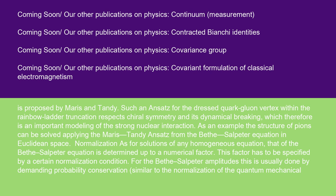Normalization: as for solutions of any homogeneous equation, that of the Bethe-Salpeter equation is determined up to a numerical factor. This factor has to be specified by a certain normalization condition. For the Bethe-Salpeter amplitudes, this is usually done by demanding probability conservation, similar to the normalization of the quantum mechanical wave function.